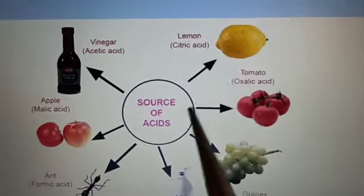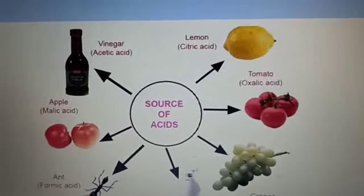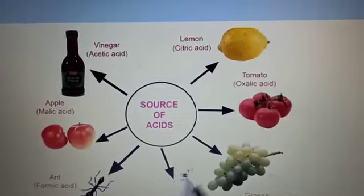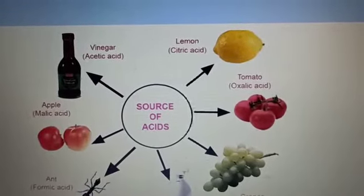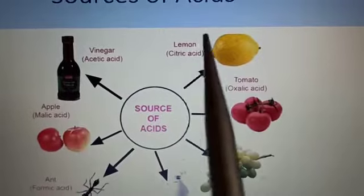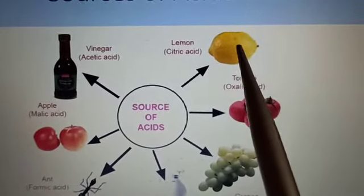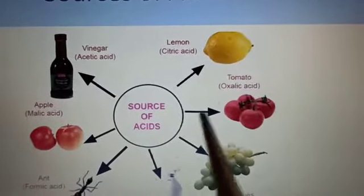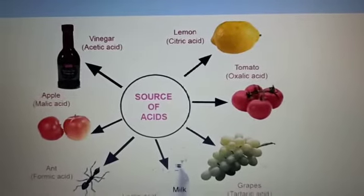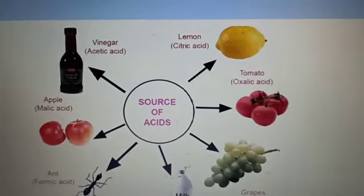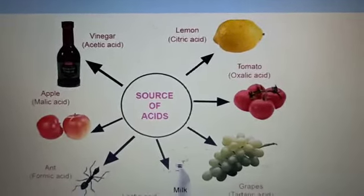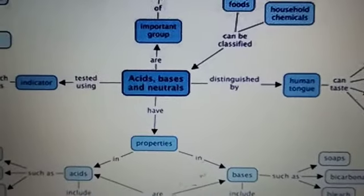Lemon is considered as citrus fruit and these all acids are sour in taste. So vinegar is also sour in taste, tomatoes are sour, lemons are sour. So in this way you can find the characteristic features of acids also.